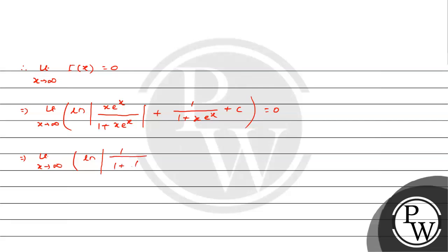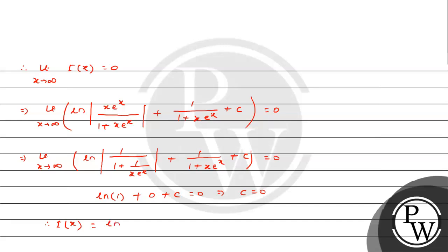We get ln|1 / (1 + 1/(x·e^x))| + c equals 0. Putting x tending to infinity, 1/(x·e^x) tends to 0, so this becomes ln(1) + c equals 0. That is, c equals 0 because log 1 is 0. Thus we have I(x) as ln|x·e^x / (1 + x·e^x)| + 1/(1 + x·e^x).